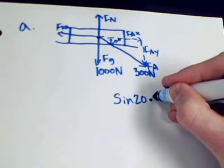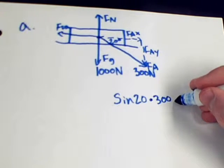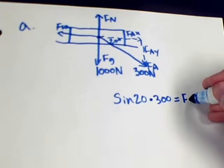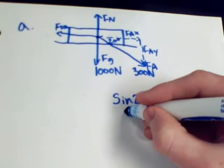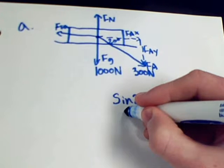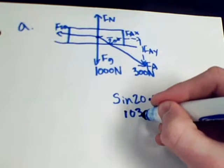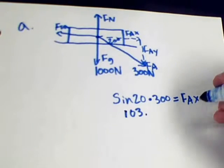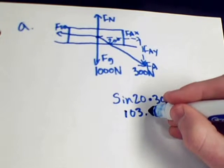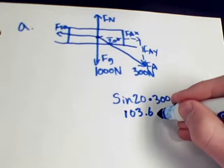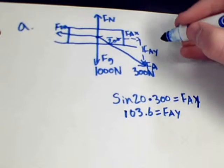Now, what we have to do is take the sine of 20 degrees times 300 newtons, and that will give us the force applied in the y direction. If we do that correctly, we should come out with 103 newtons. I apologize — that was not the force applied in the x direction, it was in the y direction. That was my bad.